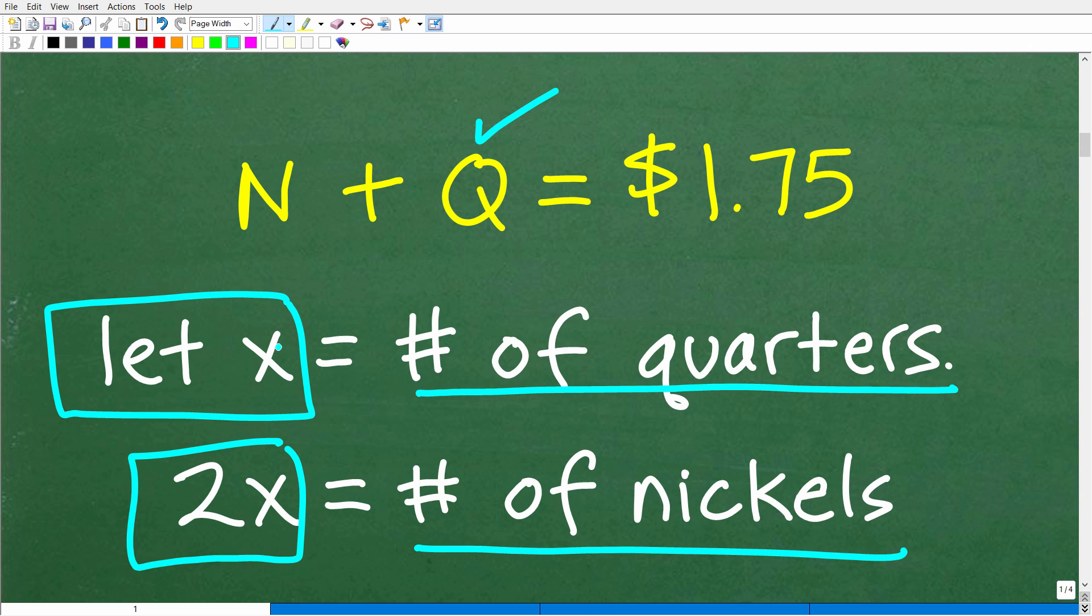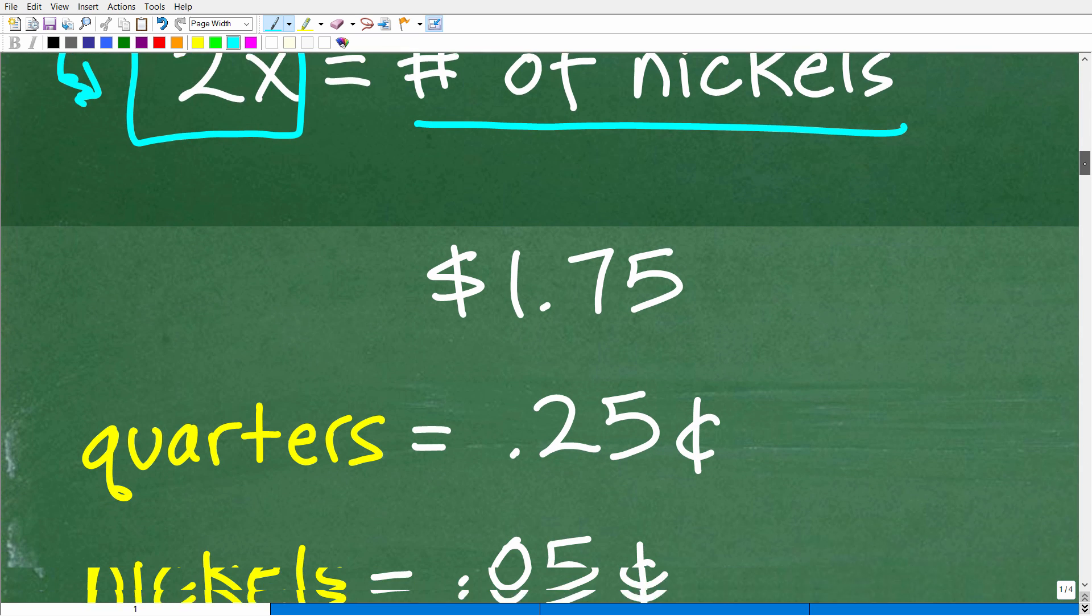So if we can find out what X is, we can certainly answer what 2X is. Okay. But here, nickels and quarters, we have money here. This is not going to work for us, but it's just some sort of visual model of what's going on. But we have at least established some variables. Okay. So now let's go on to the next part.